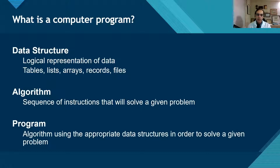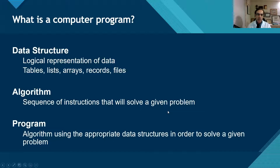So what is a computer program? It has three pieces. First, data structures — the logical representation of data — which you have to define upfront when writing a computer program. You have to tell the computer where the data is, how it's stored, and where it's stored. Then you have the algorithm, which is the sequence of instructions that will solve a given problem. This is the programming logic you develop in English and then have a translator convert into computer language. The program is the algorithm and the appropriate data structures working together to solve a given problem.